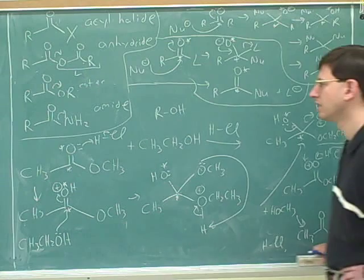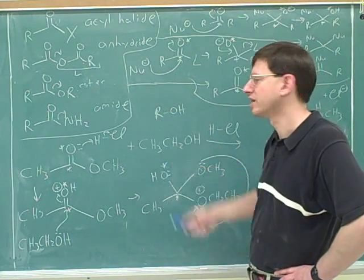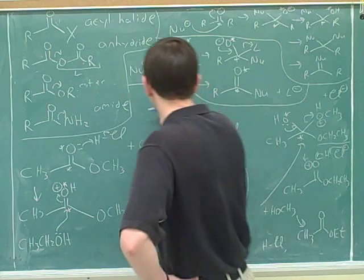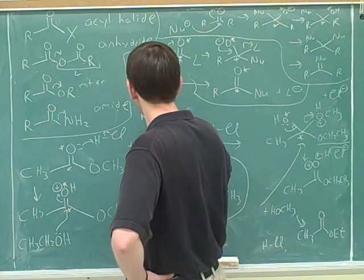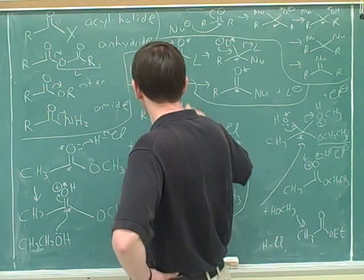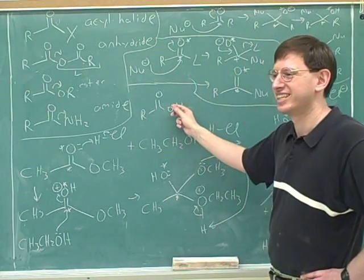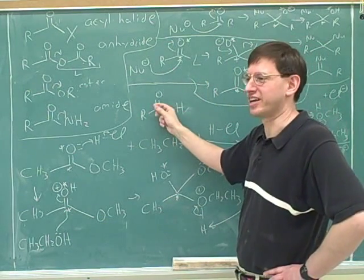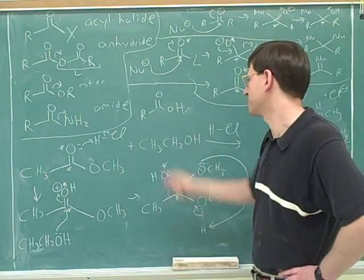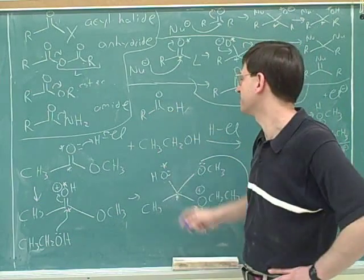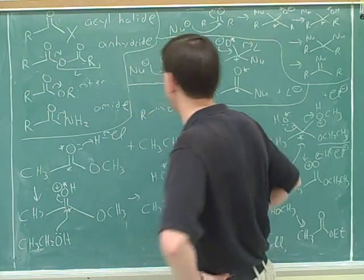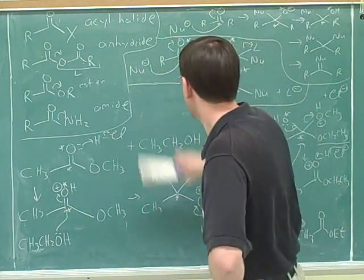An OH attached to a normal carbon is an alcohol. An OH attached to a normal carbon with no other interesting function. A boring carbon. Yeah. So for example, this is not an alcohol. This is not an alcohol because this is not a boring carbon. This is a carbonyl carbon. But if this was a boring, ordinary carbon, then it would be an alcohol. So this is not an alcohol. But this is, basically.